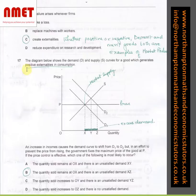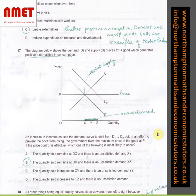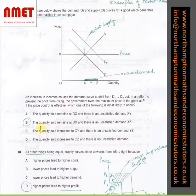In question number 17, the diagram below shows the demand D and supply S curves for a good which generates positive externalities in consumption. So Pmax, that's the maximum price that can be charged. That's the supply. At that price, D2 is the consumption. So XYZ or XZ is the excess demand. Hence, the quantity sold remains at OX, which is the supply, and there is an unsatisfied demand like Z. Hence, the answer is B.